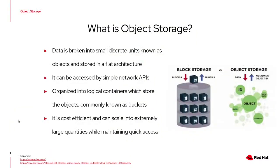So what is object storage? In object storage, data is broken up into small discrete units known as objects, which are then stored in a flat architecture. Data can be accessed through simple network APIs and we organize these objects into logical containers, commonly known as buckets. This is an extremely cost-efficient and scalable way to store large quantities of data while maintaining quick access.